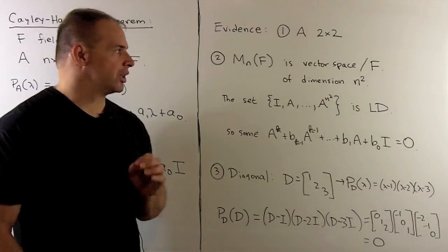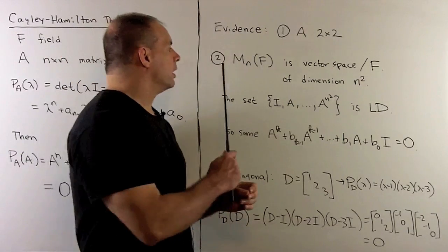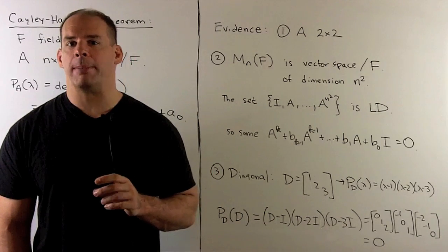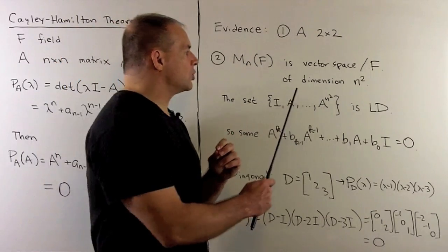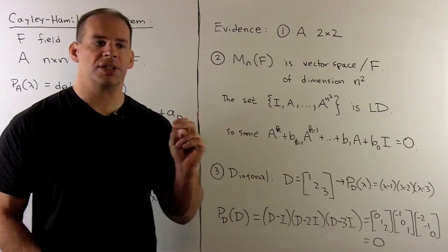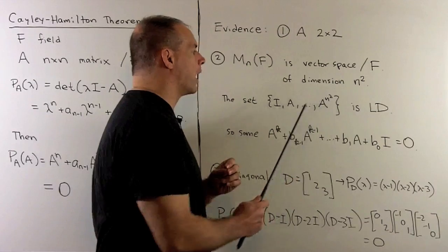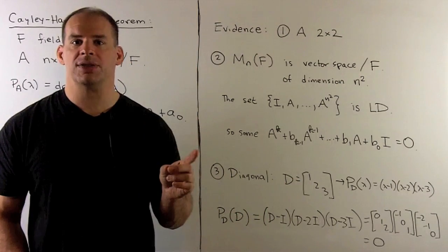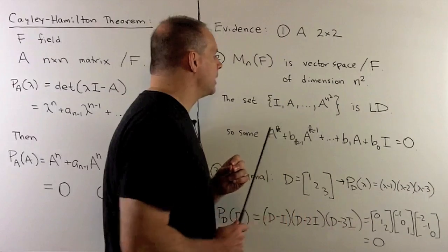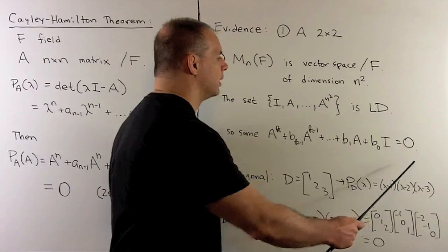For the first question, consider the vector space of n-by-n matrices with entries in our field. This is a vector space because we can add two square matrices and scale by elements in F. Since n-by-n means n-squared entries, the dimension of our vector space is n-squared. Consider the set of the identity matrix, A, A-squared, A-cubed, up through A to the n-squared — that's n-squared plus one elements. Since the dimension is n-squared, we have a linearly dependent set, so some linear combination equals zero. That's saying we have a monic polynomial in A equal to zero, answering our first question.